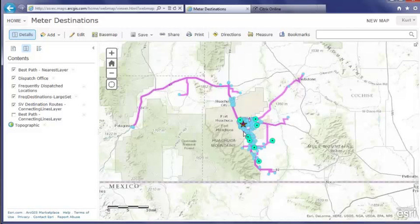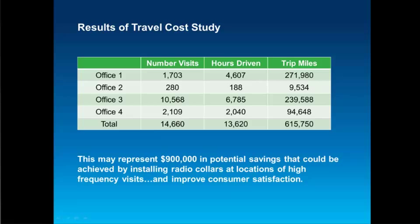Let's switch back to the presentation and see what the results of the study showed. ArcGIS Online turned those initial locations into a very good estimate of the miles driven and hours on the road. As an electric utility, we are responsible for the safe operation of our electric network, including meters, so driving doesn't bother us. However, this shows that in aggregate, we have spent a lot of hours on the road just for this one activity. Using this new meter collar to remotely disconnect or connect the power, many of these trips can be avoided. It is possible that these new collars will pay for themselves based on labor and fuel costs spread out over several years.